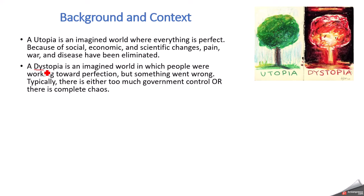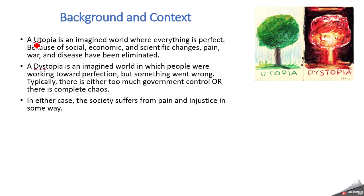The Greek root 'utopia' actually means 'no place,' but the prefix 'dys' means bad or evil. A dystopia is a world in which people were working toward perfection, but something went wrong. Typically a government tried to set up a perfect society, but we're seeing how things are the opposite — there's too much government control in some instances, or there's just complete chaos. Something's gone wrong and the society is quite sick, suffering from pain and injustice.